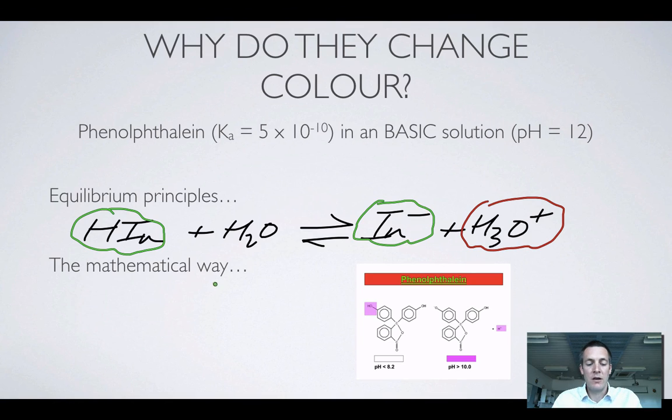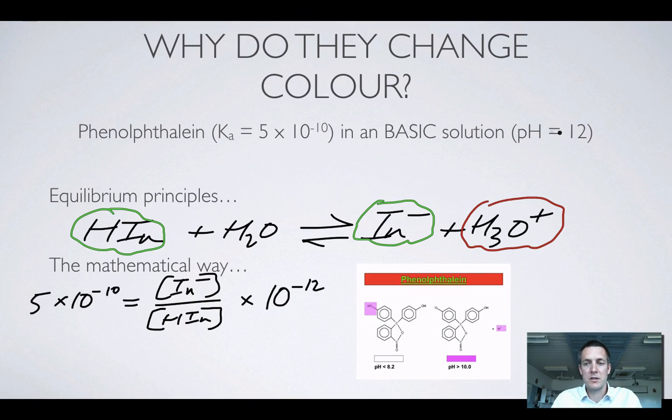If we're looking at this from a mathematical viewpoint then we can say that Ka which is 5 × 10⁻¹⁰ is equal to, like before, the ratio of In- to HIn multiplied by the concentration of H+ ions. I'm just taking this out of the equilibrium constant expression which is now 10⁻¹² because it's pH of 12. So in other words 5 × 10⁻¹⁰ divided by 10⁻¹² is equal to the ratio of In- to HIn.